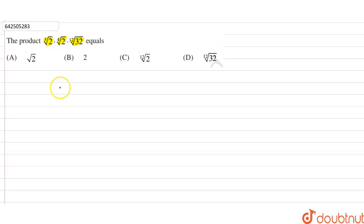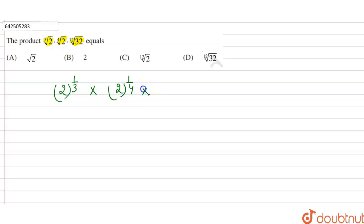To remove the under root sign, we can write it as 2 raised to the power 1 by 3, multiplied by 2 raised to the power 1 by 4, and into 32 raised to the power 1 by 12.